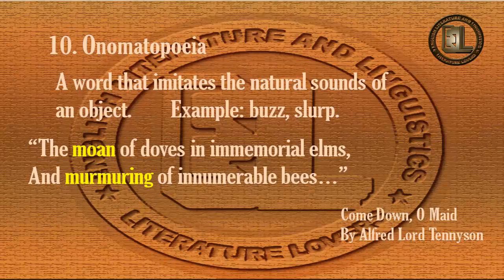Examples include: buzz — the sound made by bees; moo — the sound made by a cow; or slurp — the sound made by a cat or dog while drinking liquid. The poetic example is from the poem 'Come Down, O Maid' by Alfred Lord Tennyson: 'The moan of doves in immemorial elms, and murmuring of innumerable bees.' The word 'moan' and the word 'murmuring' are examples of onomatopoeia.